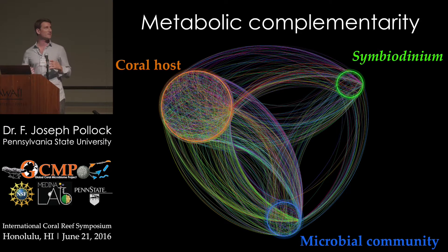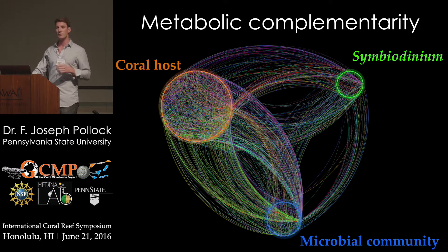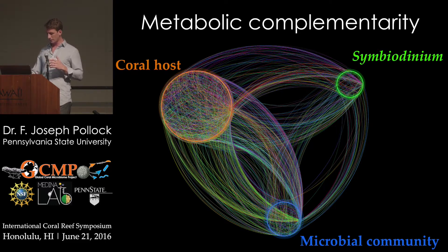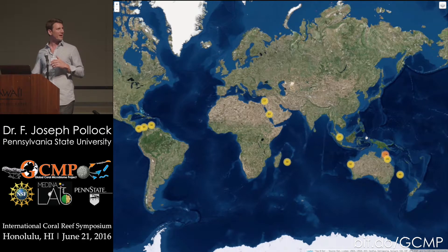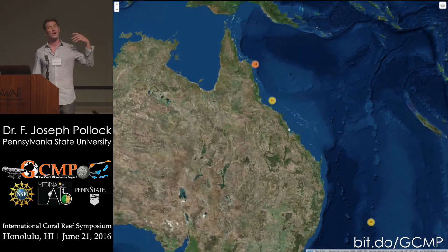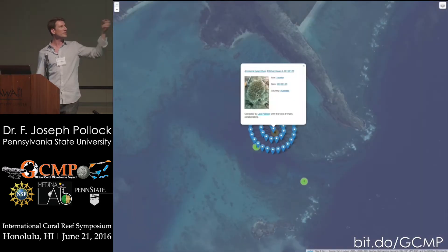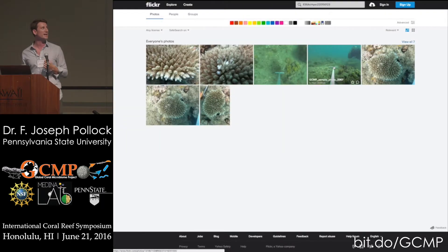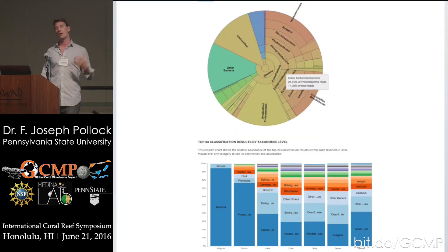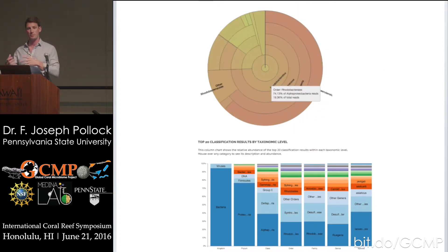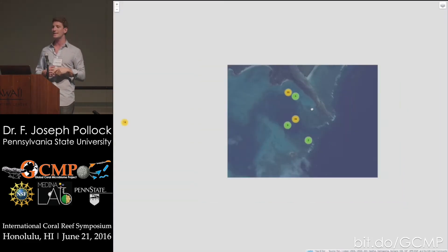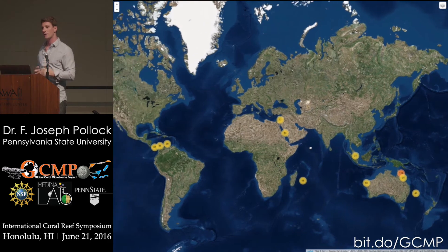The final point I want to make is that the Global Coral Microbiome Project is meant to be an asset for the field as a whole. We're putting a lot of effort into making our data publicly accessible as quickly as possible. This is a map that Ryan McMines has put together, where you can access every coral we've sampled, zoom in, look at photos of each individual coral, and get metadata. We're going to be posting our microbiome data publicly as quickly as possible so that people can use this as an asset for their own research as well as for outreach and science communication.